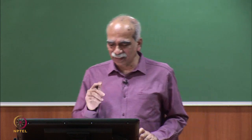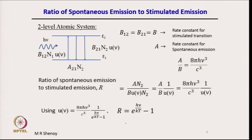In the two-level system, B12 = B21 = B, and we call the constants simply A and B. B is the rate constant for stimulated transitions — both stimulated emission and stimulated absorption — and A is the rate constant for spontaneous emission. From Einstein's relation, A/B = 8πhν³/c³. If the medium has refractive index n, then c should be replaced by v = c/n.